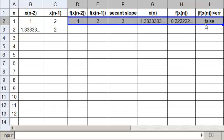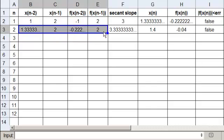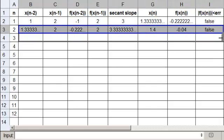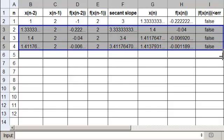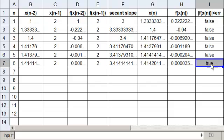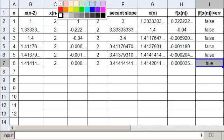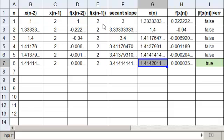And then we copy this row down until we get true. That's false, false, false, true. So mark it green, mark our answer green, and mark our number of iterations green. So it took us six iterations now to get to this. I believe in the secant method, it took us four iterations. So it took us two extra iterations with the Regula-Falsi method.